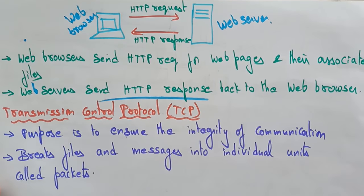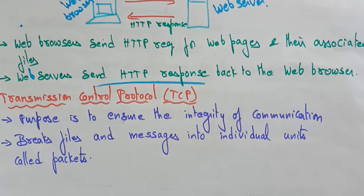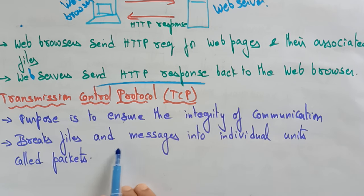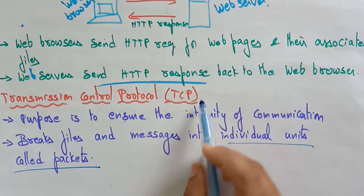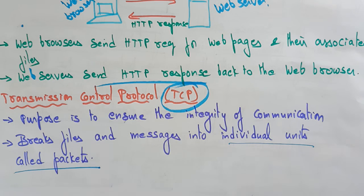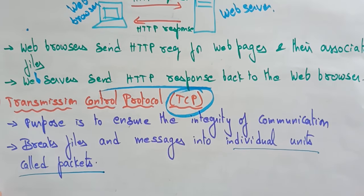Another basic service provided by the internet is TCP — Transmission Control Protocol. Its purpose is to ensure the integrity of communication. It breaks files and messages into individual units called packets, and transfers those packets from one system to another over the internet. These are some of the basic services provided by the internet. Thank you.